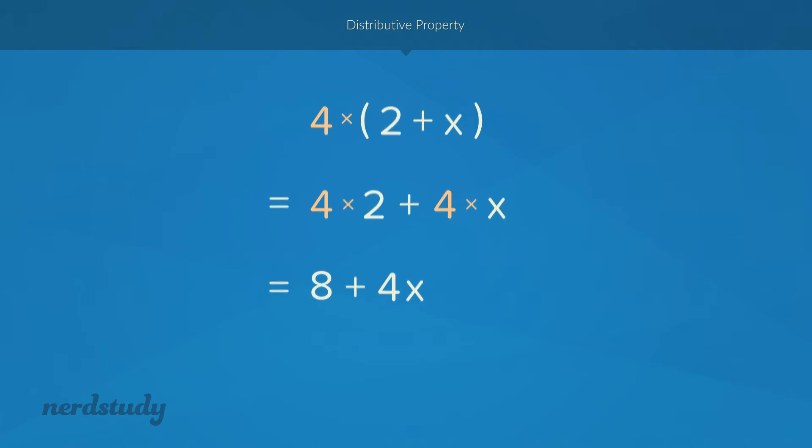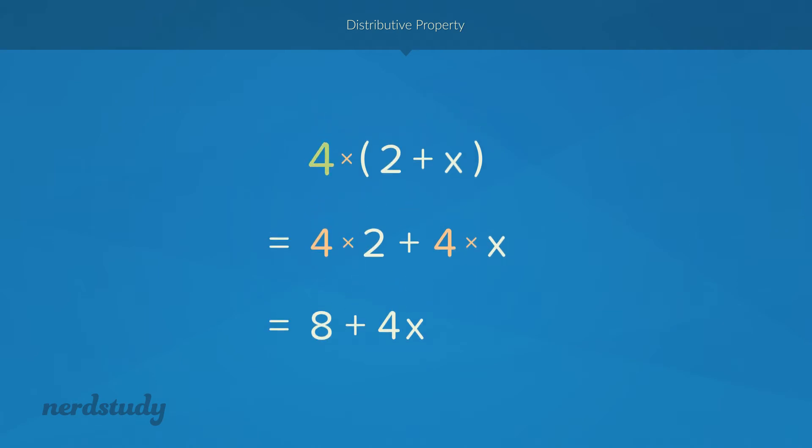So what do we do here? There was a number being multiplied by a bunch of terms inside this bracket. Granted these terms are very simple but we still have two terms. And in this situation what we did was we multiplied this number and we distributed this multiplication to each of the terms.